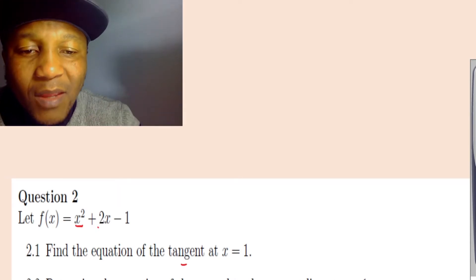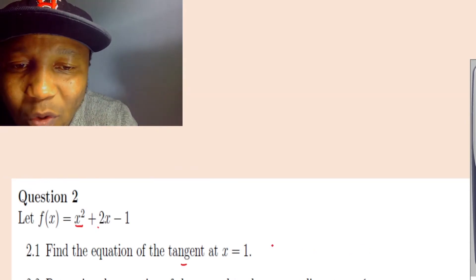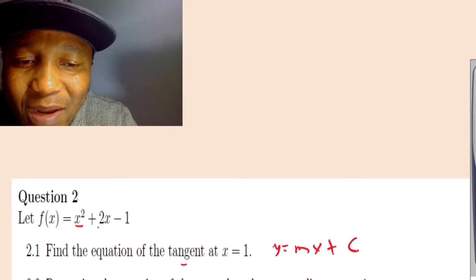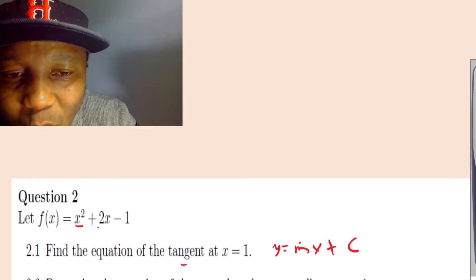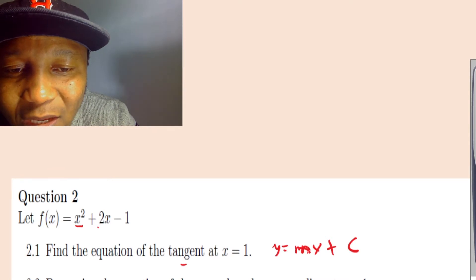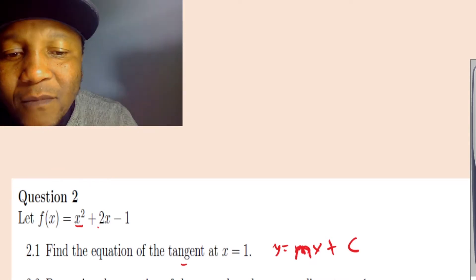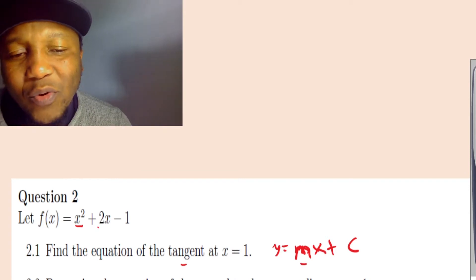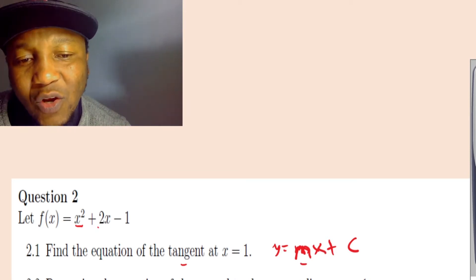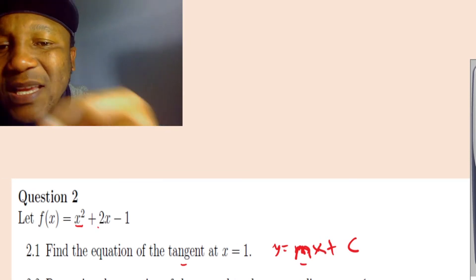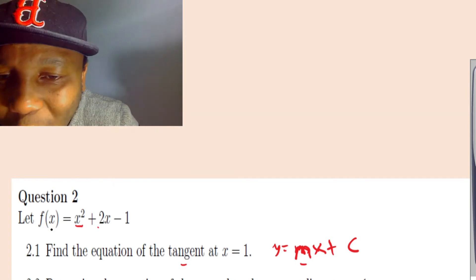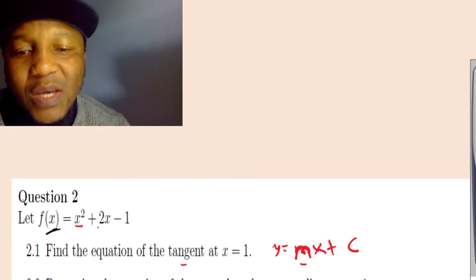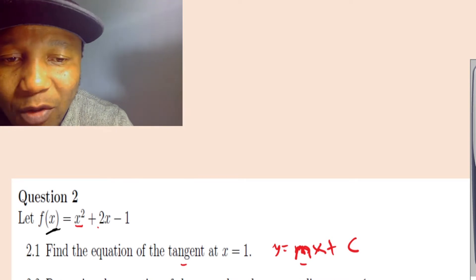The equation of the tangent is always a straight line. So the tangent equation is y = mx + c, because it is the equation of a line. First, you have to find the slope. To get the slope, you take the derivative of this function — the derivative is going to give us the slope.